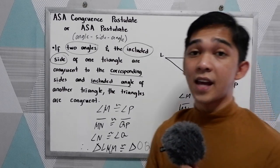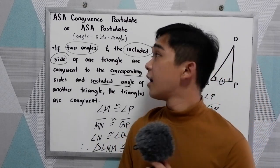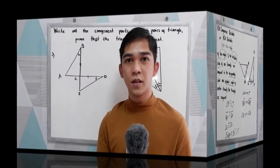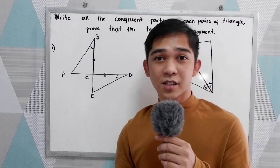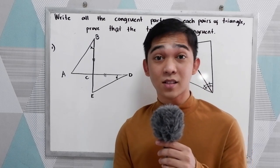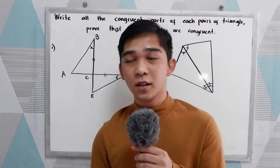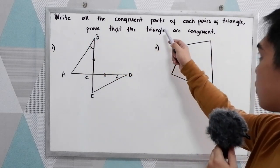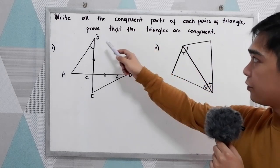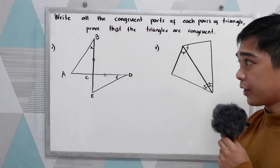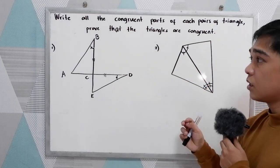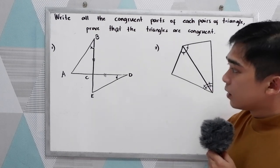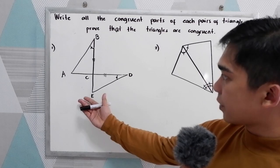Now let us have some exercises regarding the ASA postulate. The direction is: write all the congruent parts of each pair of triangles and prove that the triangles are congruent. So we have numbers 1 and 2. Study each illustration carefully.